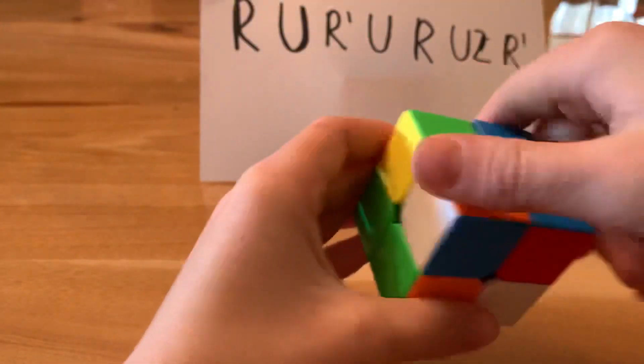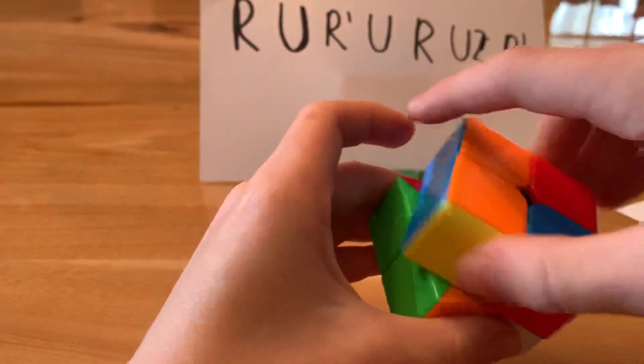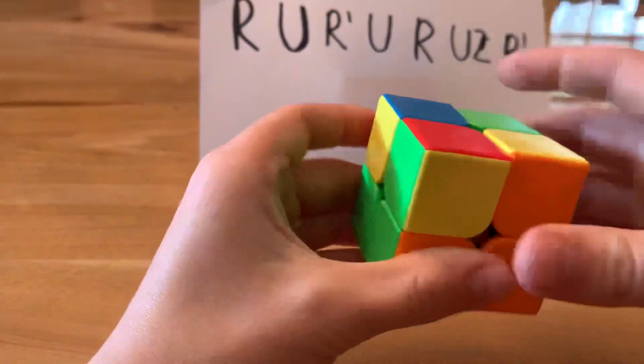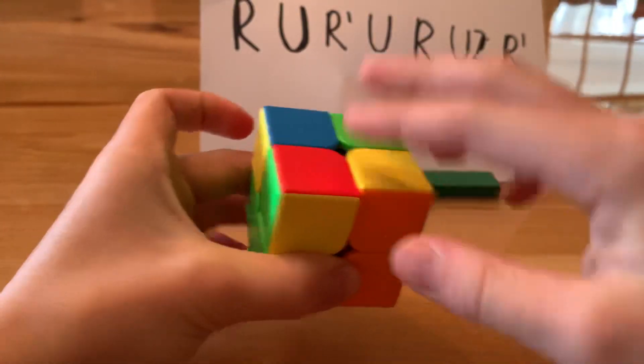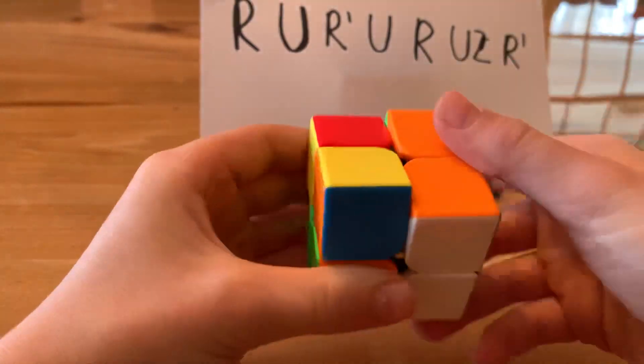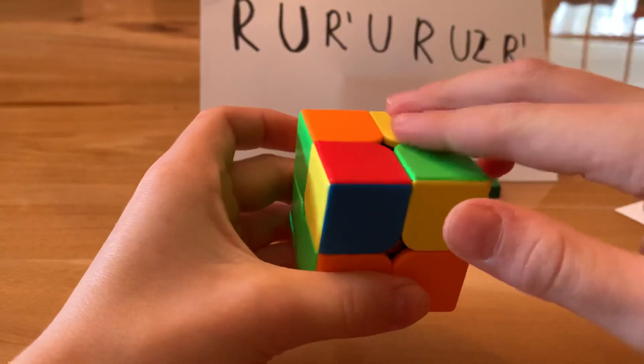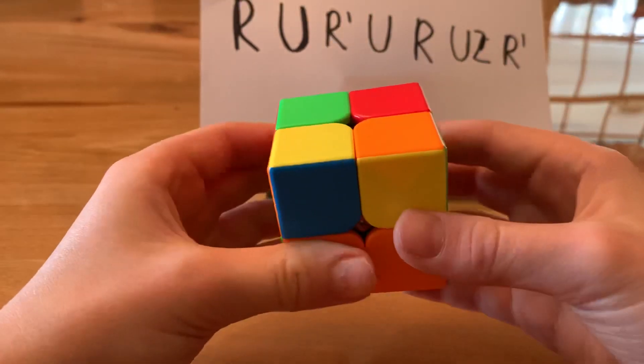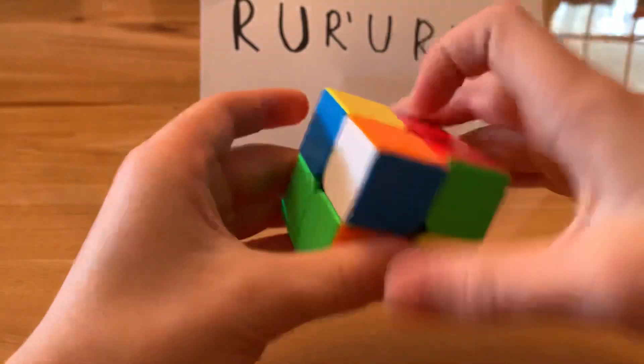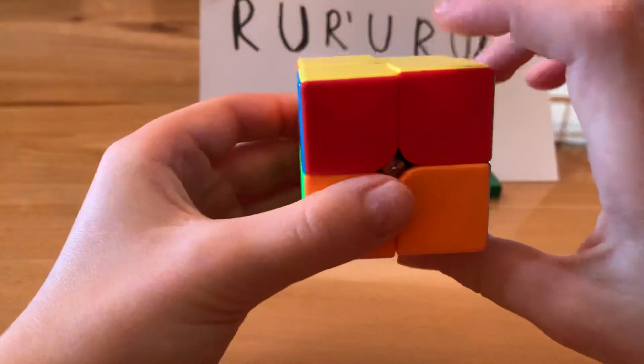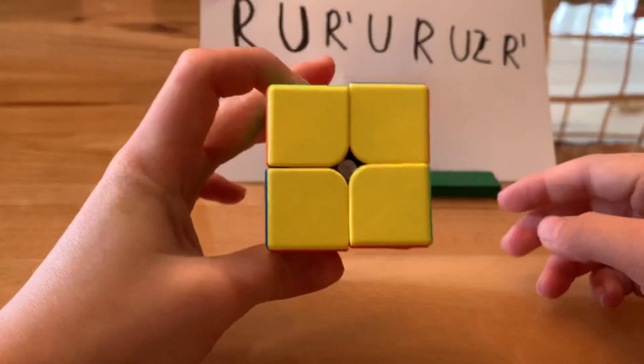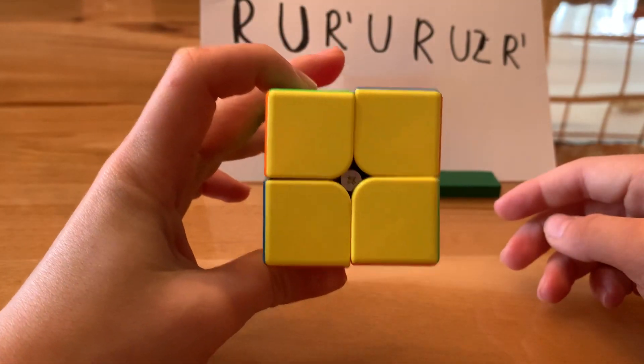R, U, R prime, U, R, U2, R prime. And see, I have one so put it here. Do it again. And then you have that one, put it there and do it again. R, U, R prime, U, R, U2, R prime. And then you know you're done when you have this side solved.